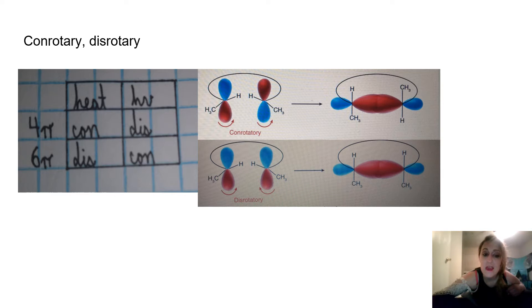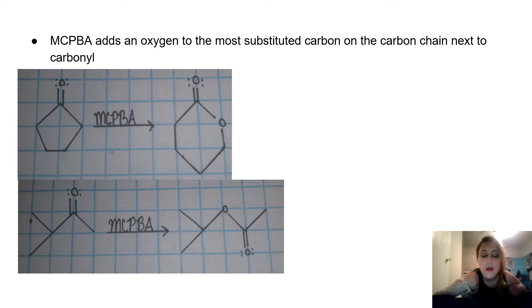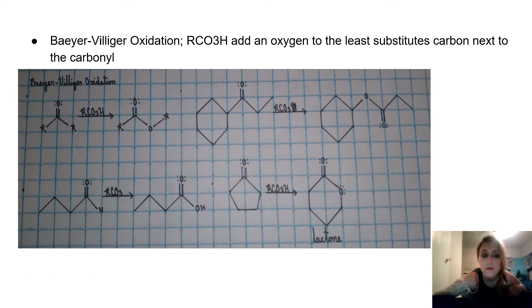4 pi electrons and heat is conrotary. 4 pi and light is disrotary. 6 pi and heat is disrotary; 6 pi and light is conrotary. We have examples right here. MCPBA adds an oxygen to the most substituted carbon on the carbon chain next to the carbonyl — this is the Baeyer-Villiger oxidation. RCO3H adds an oxygen to the least substituted carbon next to the carbonyl.